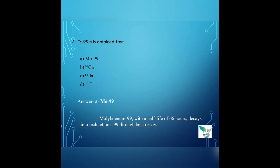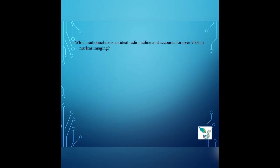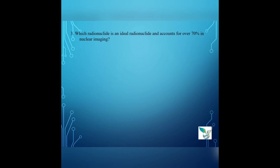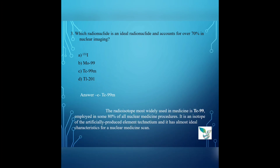Question number 3: Which radionuclide is an ideal radionuclide and accounts for over 70% in nuclear medicine? Option A: iodine-131, Option B: molybdenum, Option C: technetium 99M, Option D: thallium-201. The answer is Option C, technetium 99M. The radioisotope most widely used in nuclear medicine is technetium-99, employed in some 80% of all nuclear medicine procedures. It is an isotope of an artificially produced element, technetium, and has almost ideal characteristics for a nuclear medicine scan.